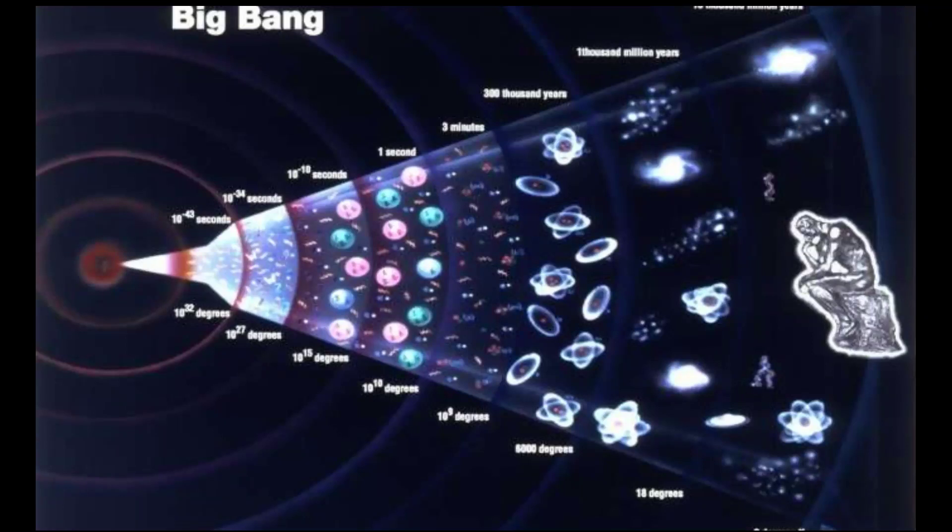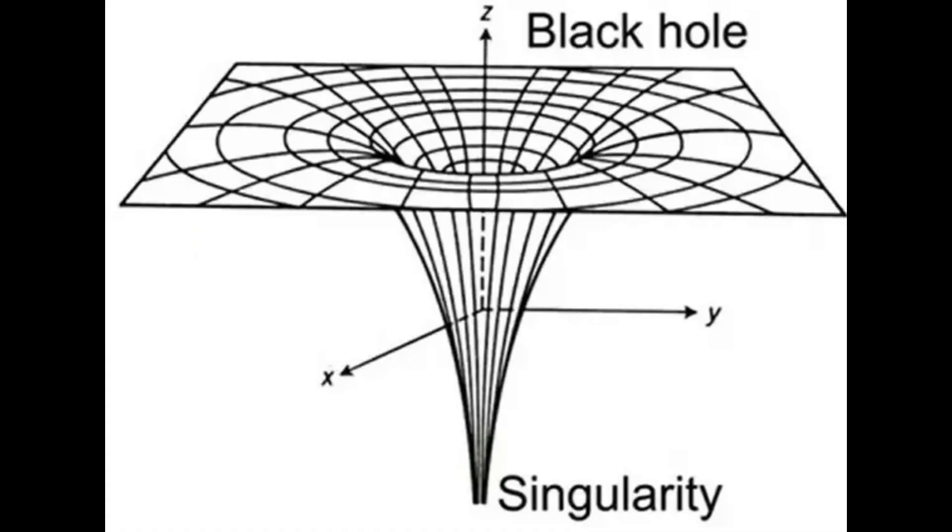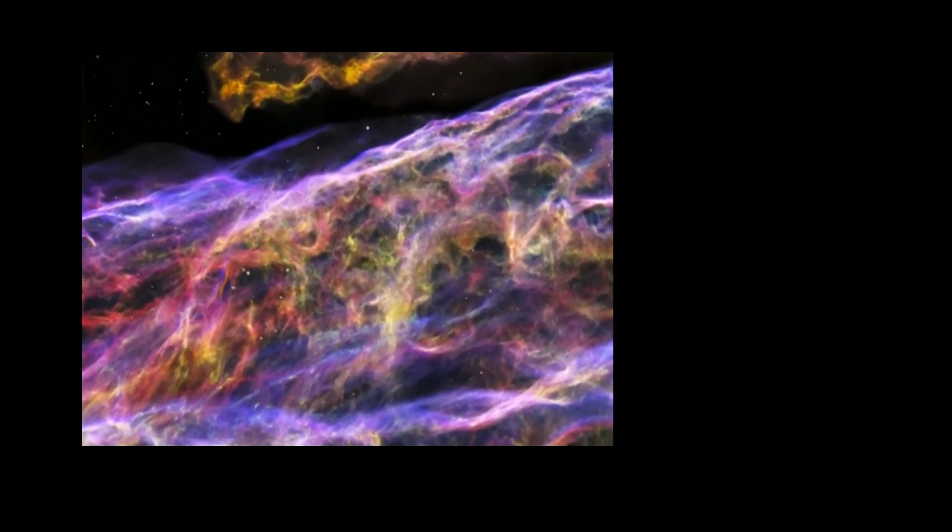The beginning, a singularity. The Big Bang theory proposes that around 13.8 billion years ago, the universe existed as a singularity. This singularity was a point of infinitely high density and temperature, containing all the matter and energy that would eventually form everything we know.